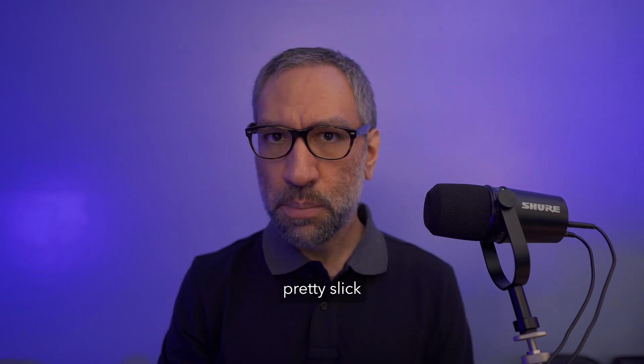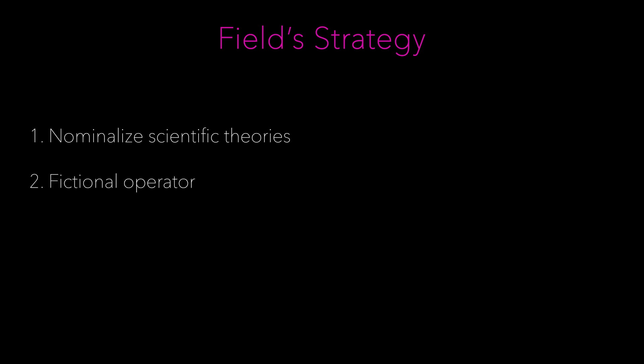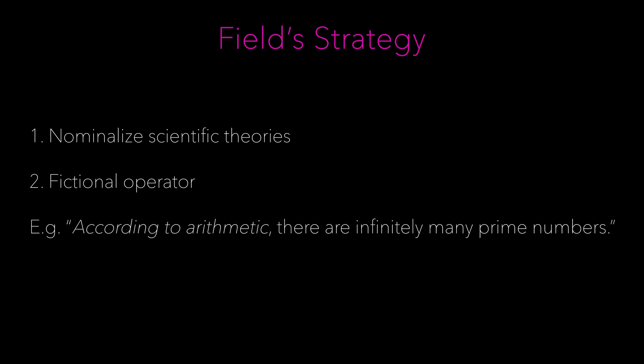Field proposed a pretty slick strategy. First, he showed that scientific theories could potentially operate without any reference at all to mathematical objects, as with Newton's theory of gravitation. Second, he introduced what's known as a fictional operator. This operator allows us to say, for example, 'according to arithmetic, there are infinitely many prime numbers.' By framing statements this way — by adding the phrase 'according to arithmetic' — Field maintains that we're not making claims about a separate mathematical reality, but are instead stating what's true within the fictional system of mathematics.